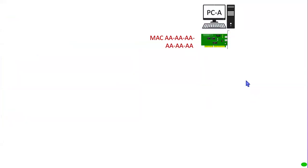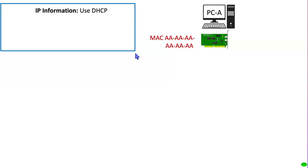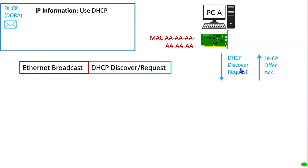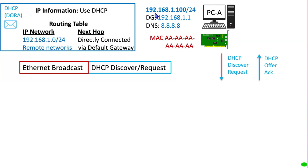PCA only knows its Ethernet MAC address, so what else does it need? It needs IP addressing information. For IPv4, most client devices use DHCP, the Dynamic Host Configuration Protocol. When PCA joins the network, it sends out a DHCP Discover message — this is an Ethernet broadcast. The server sends back a DHCP Offer. This process is called DORA: the client sends a Discover, the server sends back an Offer, the client sends a Request, and the server sends back an Acknowledgement. The result is that PCA gets IP addressing information.